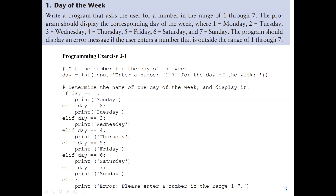One equals sign means assignment — for example, here we are using one equals sign, which means whatever value we enter, we are going to assign it to day. But if I want to check what value is in day, I use two equals signs, which is the equality operator. So if day is equal to 1, we are going to print Monday. We cover this in the lectures on relational operators — we have equal, not equal, greater than, greater than or equal, less than, or less than or equal: up to 6 different relational operators.